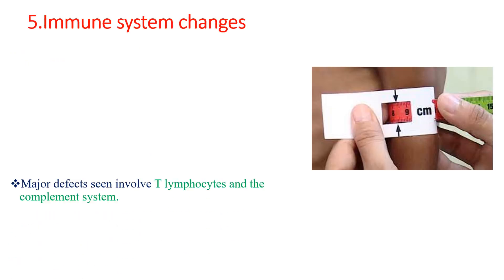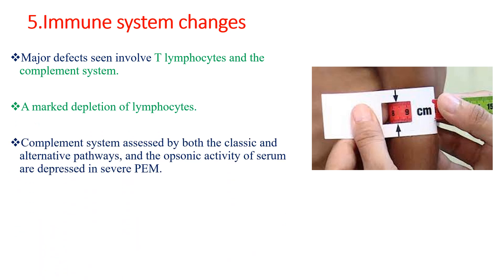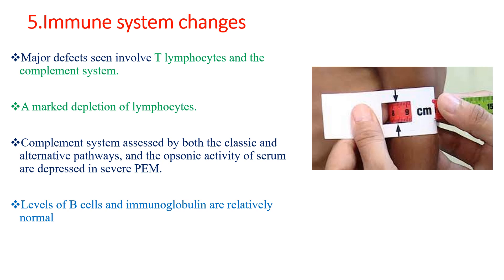The immune system changes: in malnutrition, especially in severe acute malnutrition, the major defect seen in the immune system is T-lymphocyte and complement deficiency. There is a marked depletion of lymphocytes. Complement system — both classic and alternative pathway — and the opsonic activity of serum are decreased in severe protein energy malnutrition. But in contrast, B cells and immunoglobulin levels are relatively normal. So the main immune components affected are lymphocytes and the complement system, while immunoglobulins are relatively preserved.